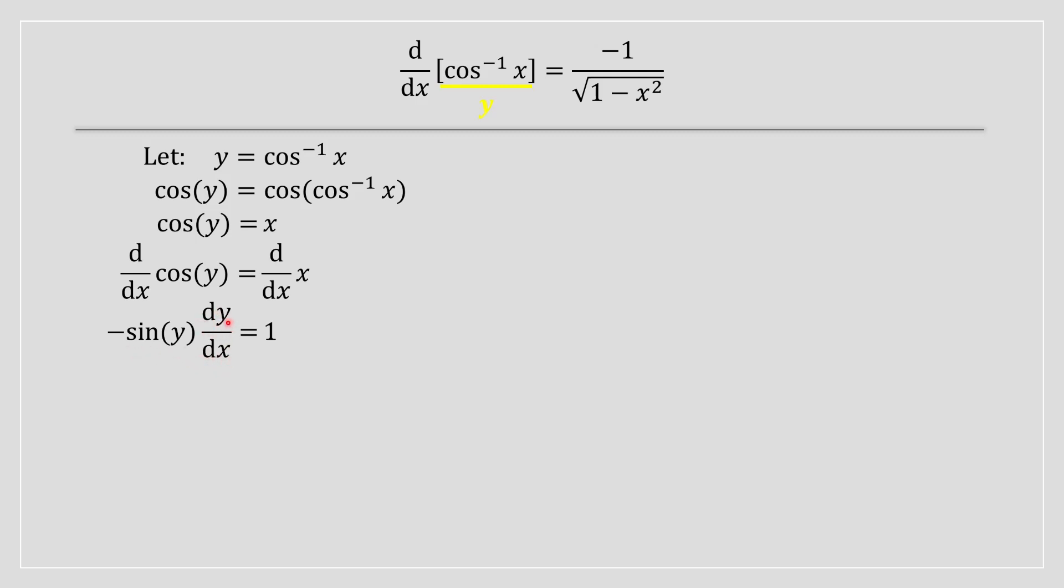We are then going to isolate just for dy/dx. And we're going to rewrite the equation as follows on your screen. So at this point, we're going to apply a trig identity to rewrite this in a more familiar format.